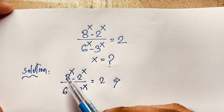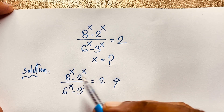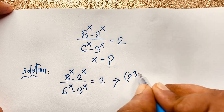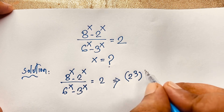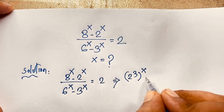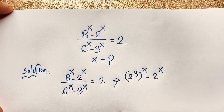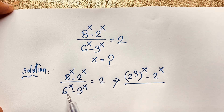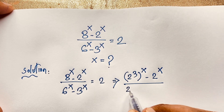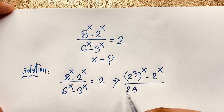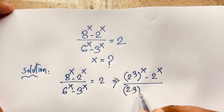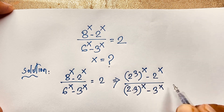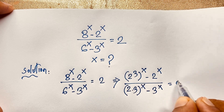In this expression, you can see this 8 — it will be 2 to the power of 3, with power x. And here 6, you can see this 6, it will be 2 times 3, with power x, minus 3 to the power of x, is equal to 2. I will solve this math question step by step.